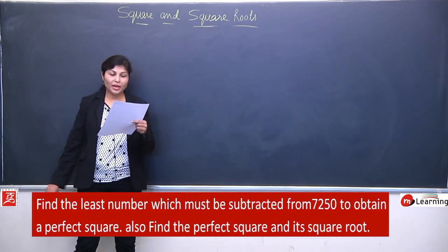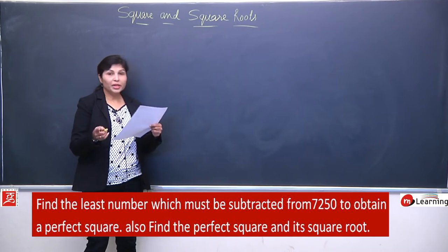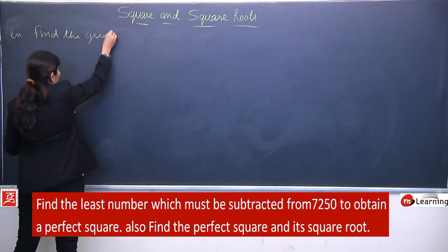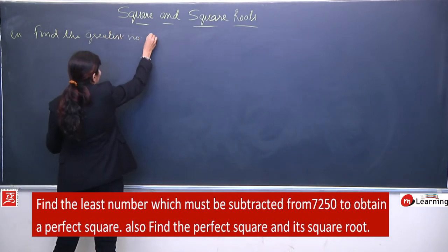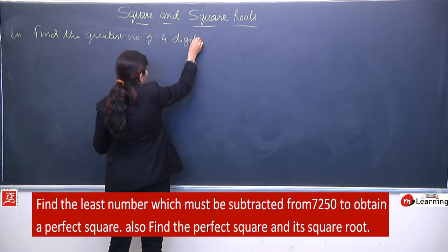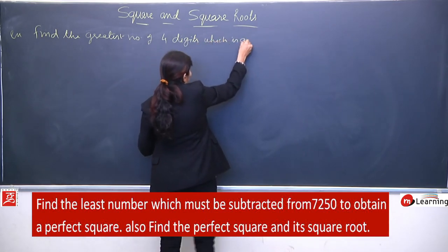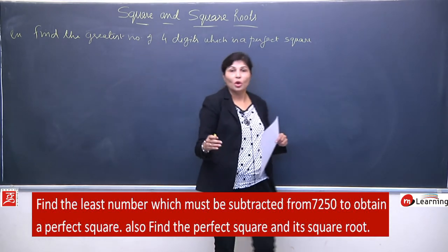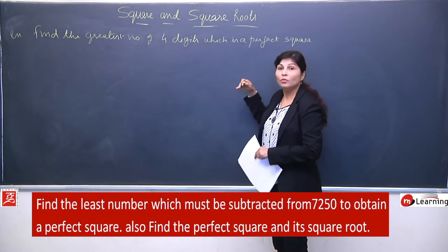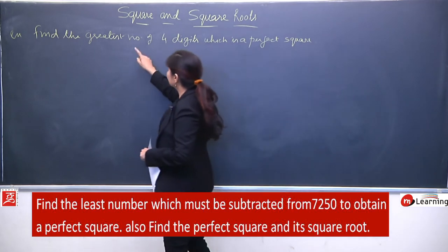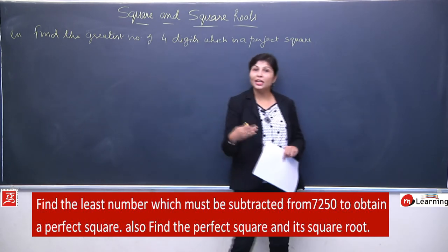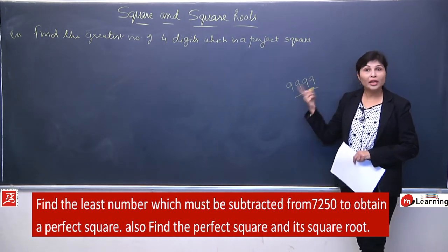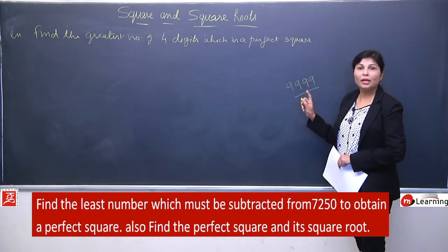Now another example: find the greatest number of four digits which is a perfect square. Previous question mein 7250 diya tha aur least number find karna tha. Is question mein number nahi diya, but clue hai — find the greatest number of four digits. Sabse pehle aapko pata hona chahiye: four digit ka greatest number kya hota hai? That is 9999. Iske baad agar 1 add karein toh five digit number ban jayega.